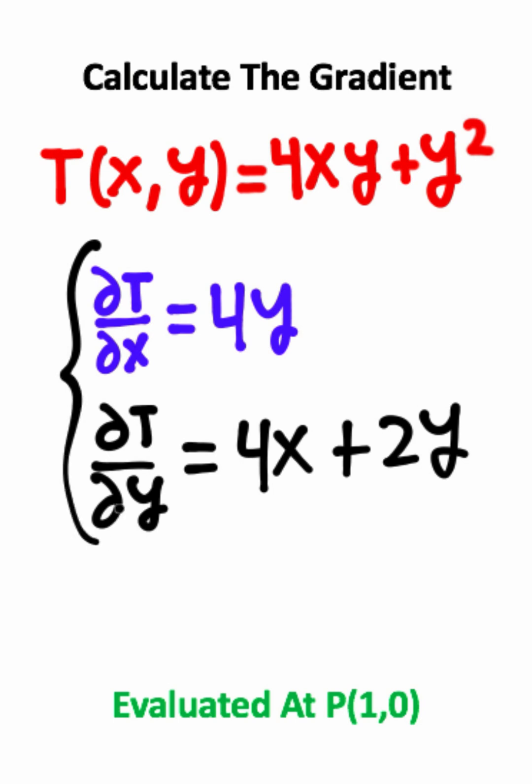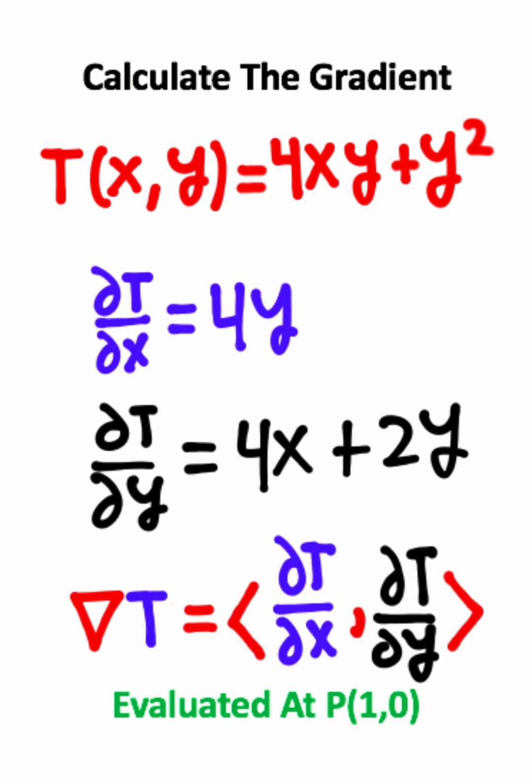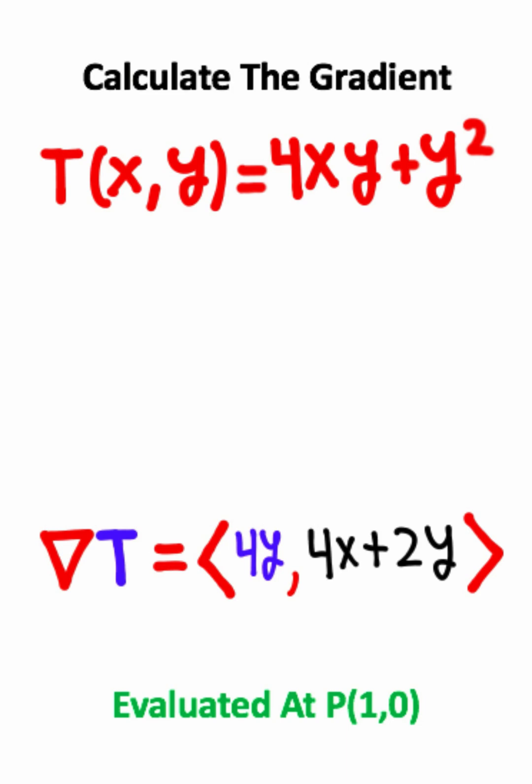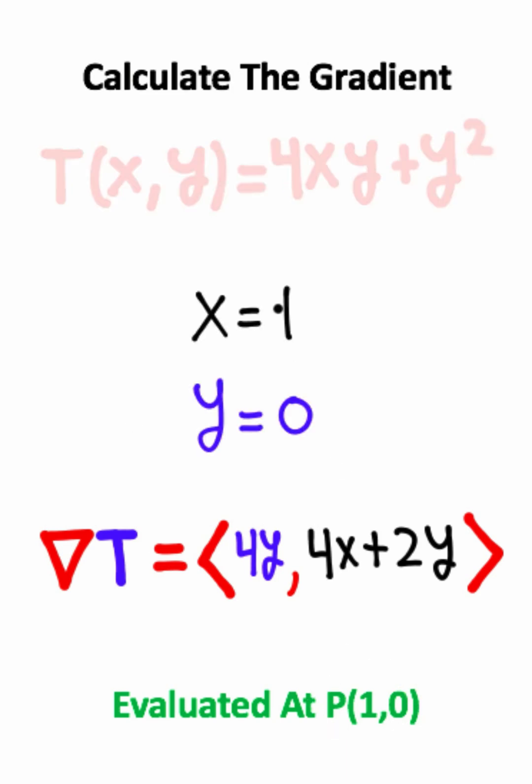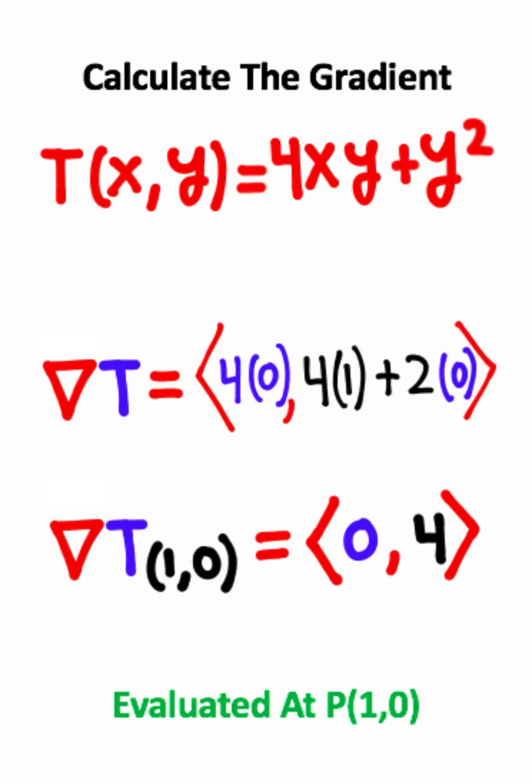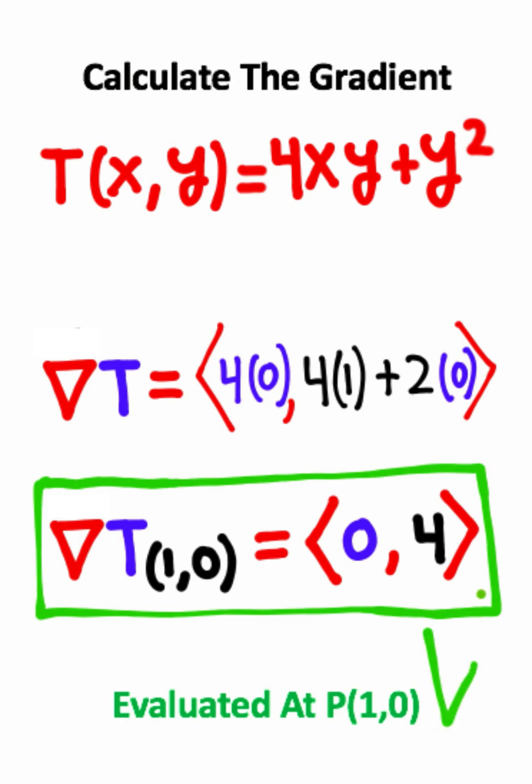Now that I have the two partial derivatives, I can find the gradient vector, which is just a collection of the partial derivatives. And to evaluate the gradient at the point, every place that I see x, I'll replace it with 1. Every place that I see y, I'll replace it with 0, which will give us the vector. So this is the answer to the problem.